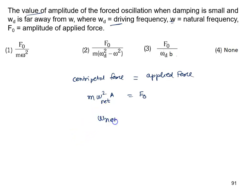omega_net is given by root of omega_d^2 minus omega^2. So m omega_net^2 equals m times omega_d^2 minus omega^2 times a equals F0.